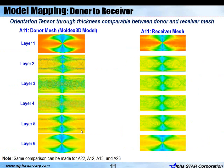In this next slide, the validation of one of the orientation tensor components is shown through layers. There are six layers for the donor mesh and the receiver mesh, and as you can see, they are pretty comparable. The same comparison can also be shown for other orientation tensors as well.